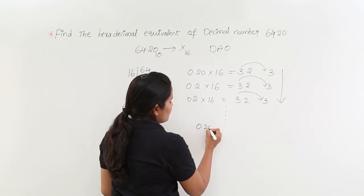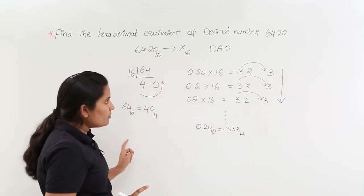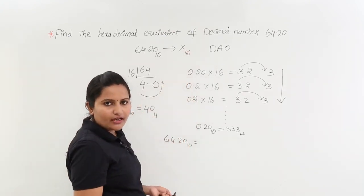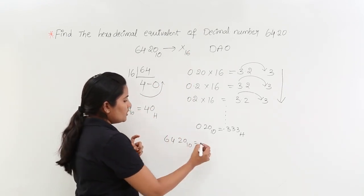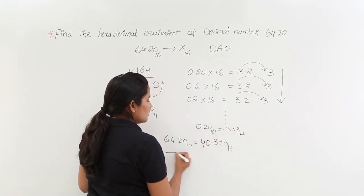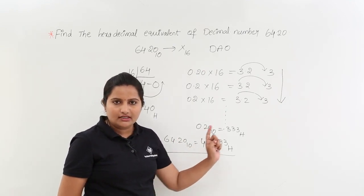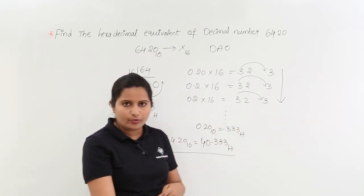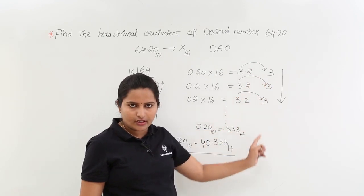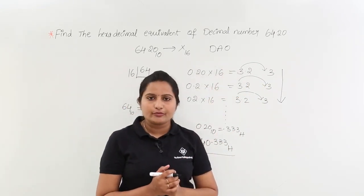The result of 0.20 decimal is equivalent to 0.333 hexadecimal. So, the complete answer: decimal 64.20 is equivalent to 40.333 hexadecimal. For 64, we have 40, and for 0.20 we have 0.333 — the number of 3s depends on the options given. If options show four 3s, you take four 3s. Therefore, 40.333 hexadecimal is the hexadecimal equivalent of the decimal number 64.20.